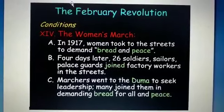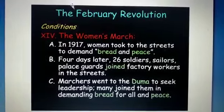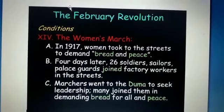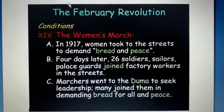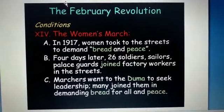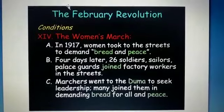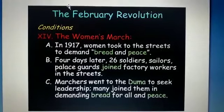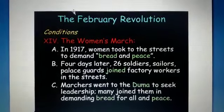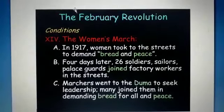February Revolution: the bread shortage among women textile workers — many with husbands in the army — forced them to go on strike and march through the factory areas of Petrograd, with masses of women workers demanding bread. The city's 400,000 workers joined the movement the next day, on 24th February.